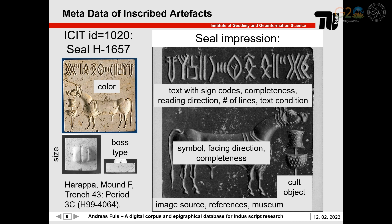Besides each text, several metadata are stored in the ISIT database. This includes the color, the material, size of the object, pot type if present, and find spot of the artifact. For each text, the sign sequence is coded with additional information about its completeness, reading direction, number of lines, text condition, and so on.